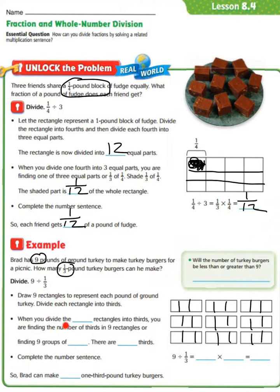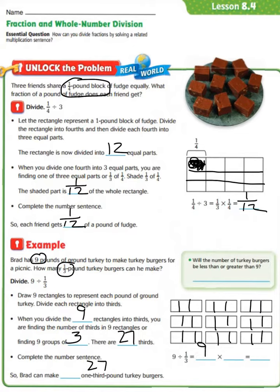When you divide the 9 rectangles — representing the 9 pounds of ground turkey — into thirds, you are finding the number of thirds in 9 rectangles, or finding 9 groups of 3. If we count up all the thirds, there are 27 thirds. So Brad can make 27 one-third pound turkey burgers. We get that from our equation: 9 divided by 1/3 equals 9 times 3, and 9 times 3 equals 27.